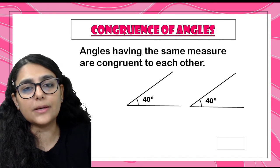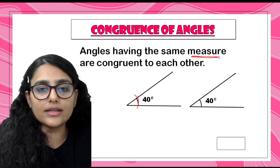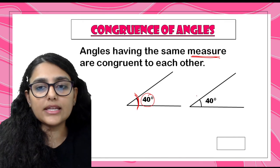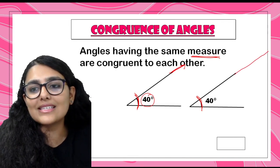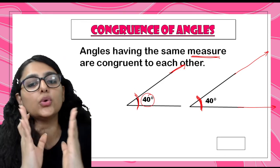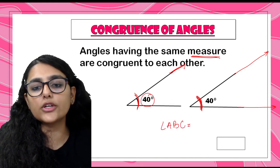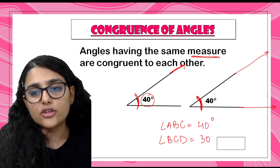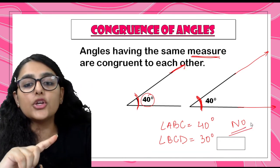Now let's talk about congruence of angles. Angles having the same measure - same degree angles - are said to be congruent to each other. For example, if one angle measures 40 degrees and another also measures 40 degrees, they are congruent. The size of the arms does not matter; only the measure should be equal. If angle ABC equals 40 degrees but angle BCD equals 30 degrees, they are not congruent because their measures are different.